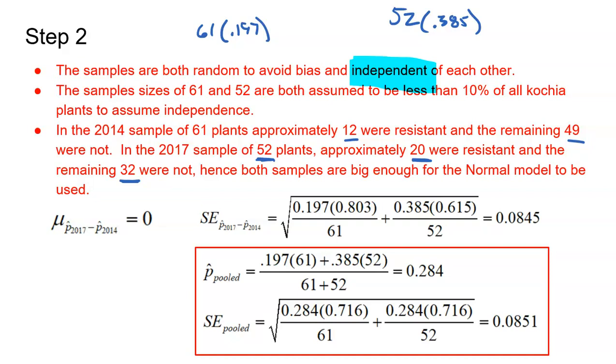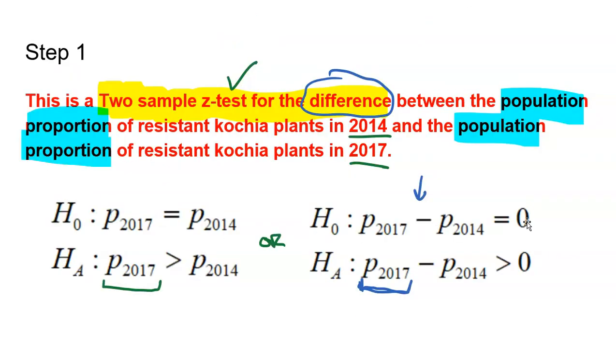This next part is going to take a second to explain. First is the center of my sampling distribution. I do have to assume that the null is correct and that there is no difference. That would mean that if I were to look at all possible sample differences between 2017 and 2014, the mean of them all would be zero. Because I said that they were equal, equal means a difference of zero.